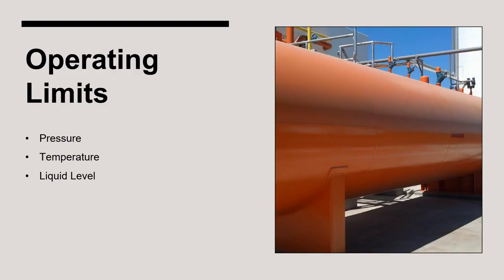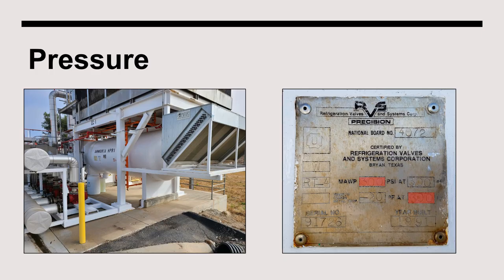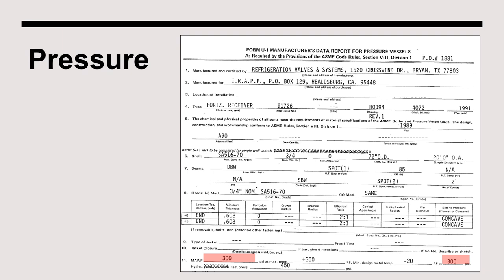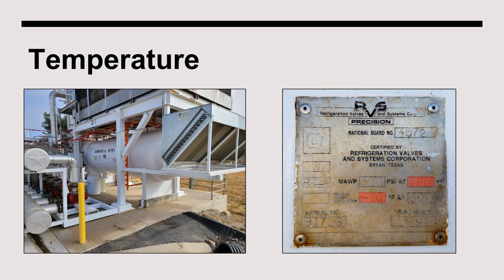The three most relevant operating limits for high pressure receivers are pressure, temperature, and liquid level. The maximum allowable working pressure of a high pressure receiver will be displayed on the ASME nameplate, and under no circumstance can the pressure inside the vessel exceed this value. The MAWP can also be found on the Manufacturer Data Report, or U1 form. Similarly, the vessel cannot operate beyond the temperatures displayed on the nameplate — in this instance, the vessel can safely operate below 300 PSI at temperatures between minus 20 and 300 degrees Fahrenheit.